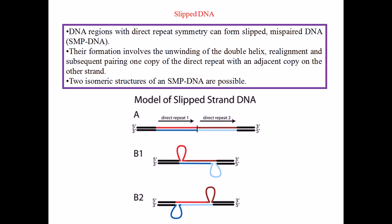Let us talk about our final discussion, which is about slipped DNA. These names are actually helpful because the name suggests that slipped DNA is a part of the DNA which is formed due to the slipping of some part of the nucleotide sequences inside the DNA.